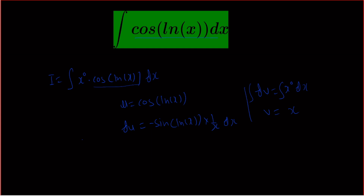Let's solve this. We leave cos(ln x) as it is and integrate x to the power 0, so we get cos(ln x) times x, minus the differentiation of cos(ln x), which is minus sine(ln x) times 1/x. Now we cancel the x, and this minus and this minus become plus.